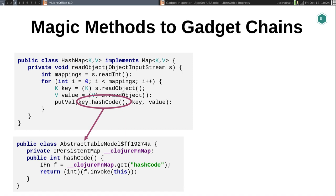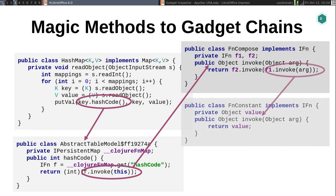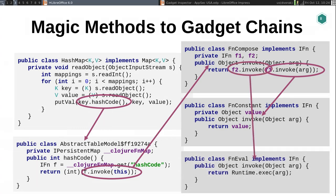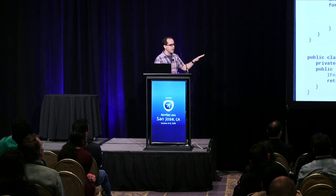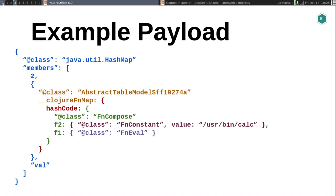So if we can supply an interesting implementation of the IFunction interface that does something interesting when you call invoke on it, then when it gets wrapped in a HashMap you'll end up invoking that. Here's an example of a function that wraps two other functions and takes the output of one and passes it to another. As an attacker we can supply whatever implementations of F1 and F2 we want — for F1 a ConstantValue function that returns whatever value is, and for F2 an eval function that will execute whatever gets passed into it. This is actually a real gadget chain in the Clojure library that I'll talk about more later.